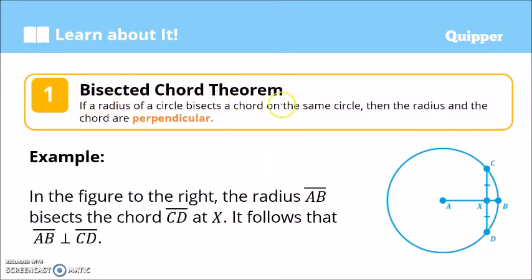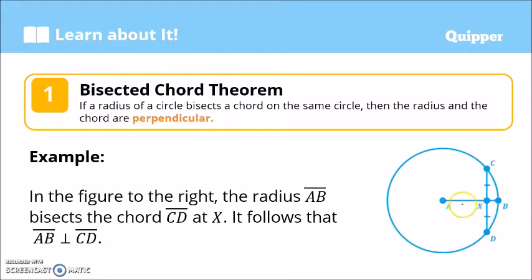The first one is the Bisected Chord Theorem. It states that if a radius of a circle bisects a chord on the same circle, then the radius and the chord are perpendicular. Here we have a circle — this is the radius, and this is the chord. This radius bisects the chord.